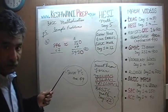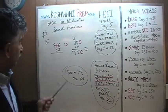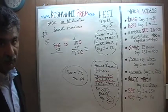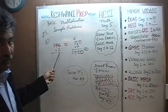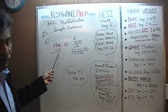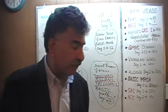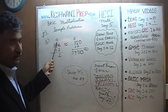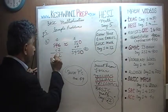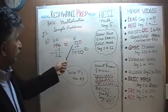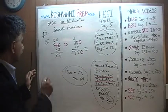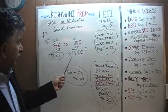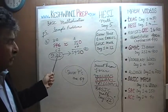Let's do it out purely for learning purposes. 6 sevens are 42, carry 4; 4 sevens are 28, plus 4 is 32, carry 3; 8 sevens are 56, plus 3 is 59. The exact answer is 5,922 — which is indeed a little less than 5,950, just as we predicted. In a real exam, we wouldn't need to do all of this.